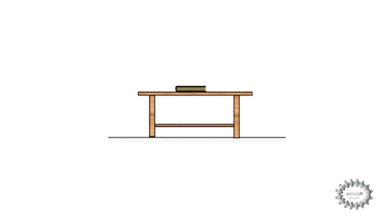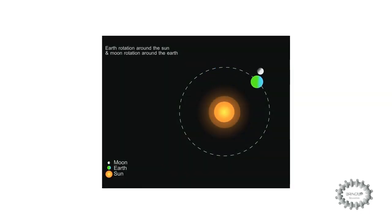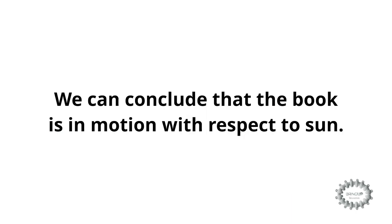For example, suppose a book is lying on a table. The book is at rest with respect to surroundings, but the earth is revolving round the sun. Therefore, anything lying on the surface of earth is also in motion. So we can conclude that the book is in motion with respect to sun.